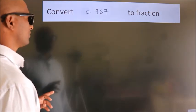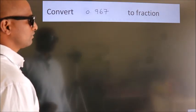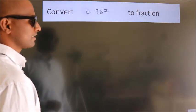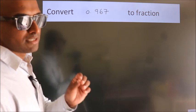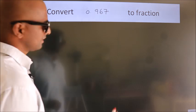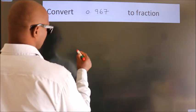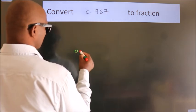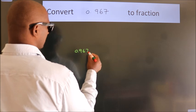Convert 0.967 to a fraction. Given is 0.967.